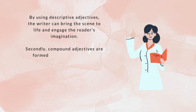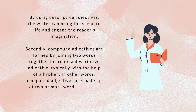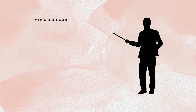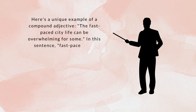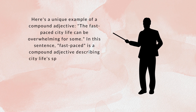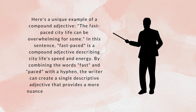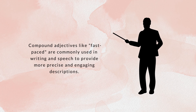Secondly, compound adjectives are formed by joining two words together to create a descriptive adjective, typically with the help of a hyphen. They are made up of two or more words that work together to describe a noun or pronoun in more detail. For example: 'The fast-paced city life can be overwhelming for some.' Here, 'fast-paced' is a compound adjective describing city life's speed and energy. Compound adjectives like 'fast-paced' are commonly used to provide more precise and engaging descriptions.